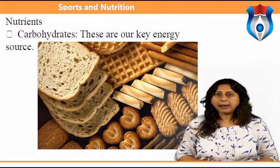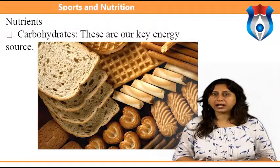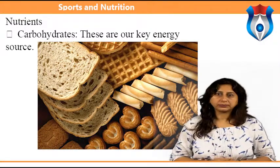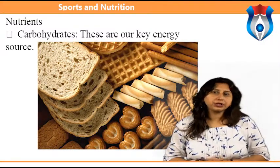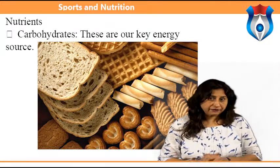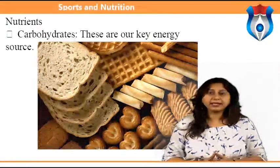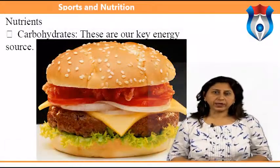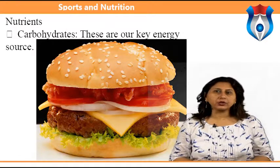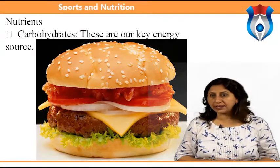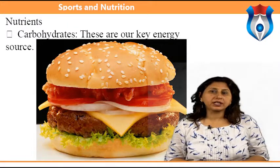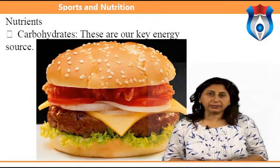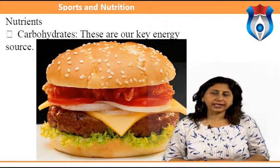There are two key forms of carbohydrates: starchy or complex, and simple sugars. Simple sugars are found in refined sugars and provide a sweet taste. Complex carbohydrates — also known as starches — include grains such as bread, pasta and rice. The carbohydrates we consume are converted into glucose, a form of sugar carried in the blood and delivered to the cells for energy.